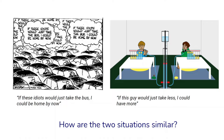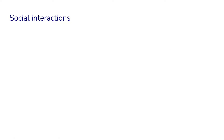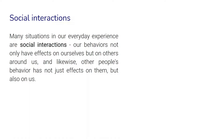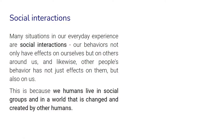Overall, situations like these, scientists sometimes call social interactions. Many situations in our everyday experience are social interactions. These are situations in which our behaviors not only have effects on ourselves, but also on others around us. Likewise, other people's behaviors have effects not just on them but also on us. This is because we humans live in social groups in a world that is changed and created by other humans, so we always affect each other in some way.